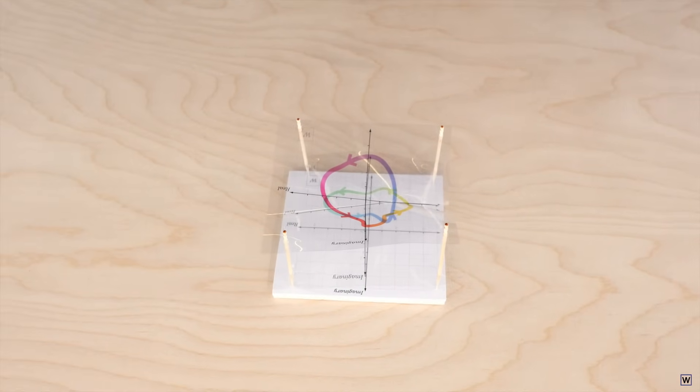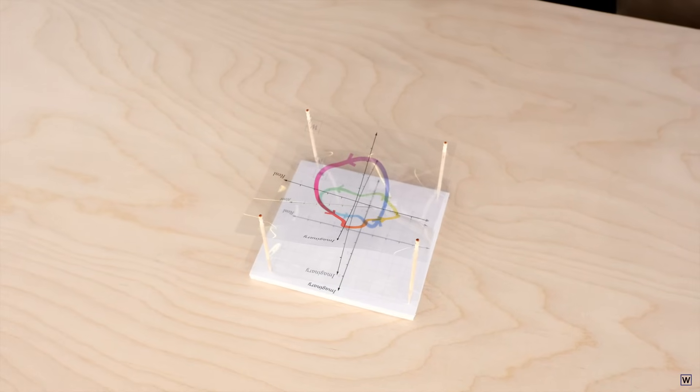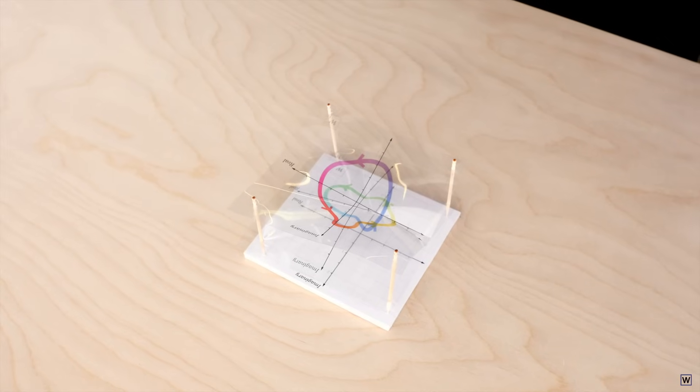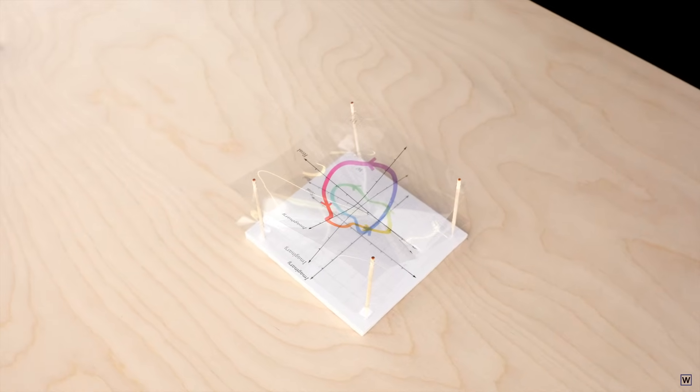This is a Riemann surface. It's going to help us think in four dimensions. We made it by cutting our planes at the discontinuities in our paths and taping them together in a way that made our paths from one plane to the other continuous.